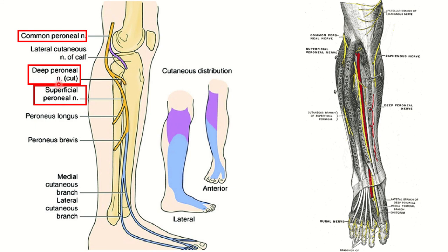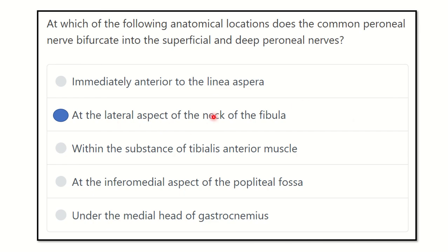This is a very frequently asked question in the MRCS exam. As confirmed in the second diagram, the common peroneal nerve bifurcates into the superficial and deep peroneal nerve at the lateral aspect of the neck of the fibula. This is the correct answer and a very important anatomical fact to remember.